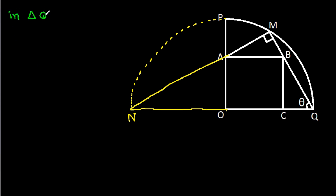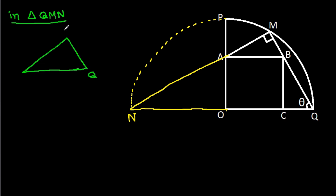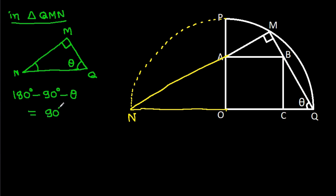In angle QMN, this angle is 90 degrees and this angle is theta. So this angle will be 180 degrees minus 90 degrees minus theta, which equals 90 degrees minus theta.